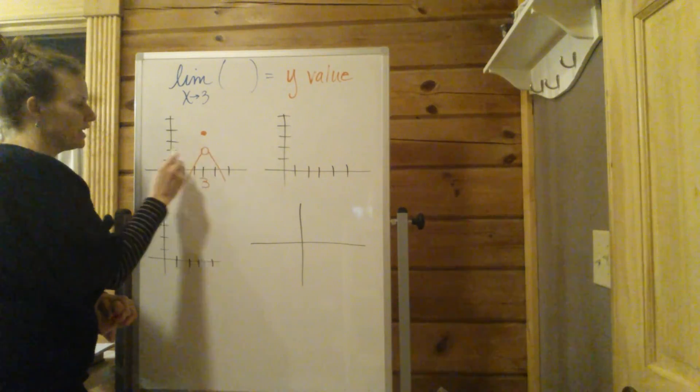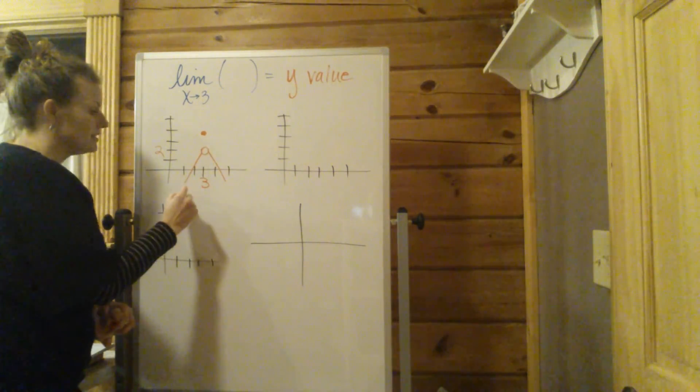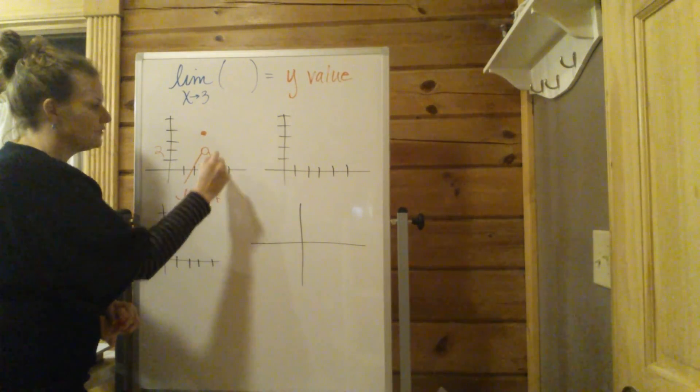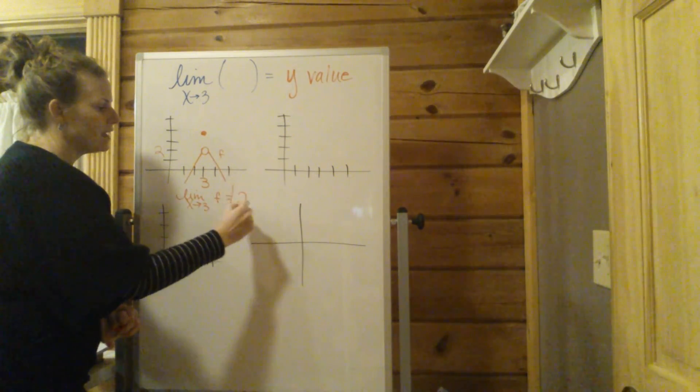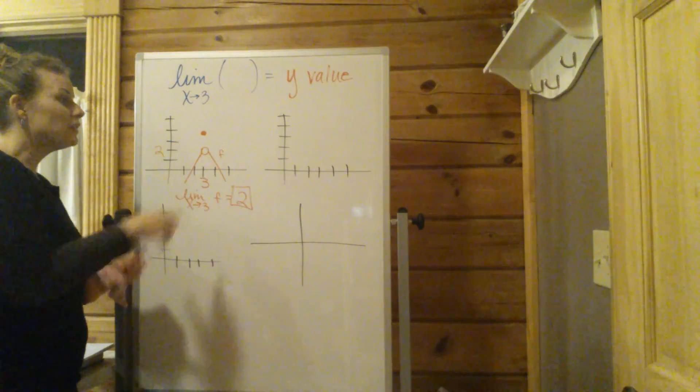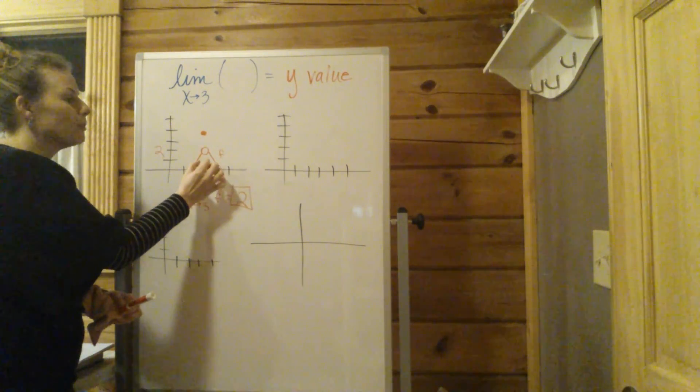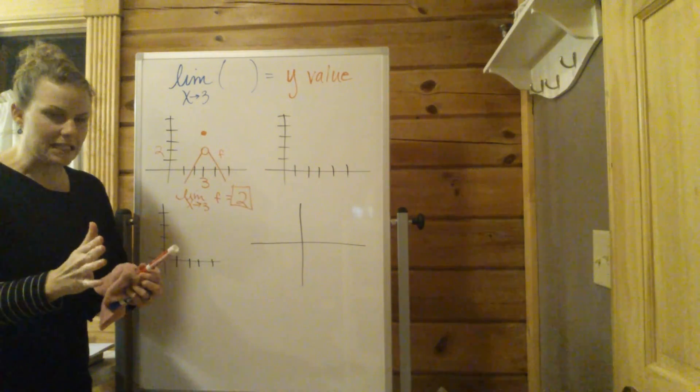The y values are getting closer to 2. So the limit in this case, the limit as x approaches 3 of this function f, will equal the actual y value, which is 2. Not the point when x equals 3, but the y value that we are approaching as x is approaching 3. That's the big limit idea.